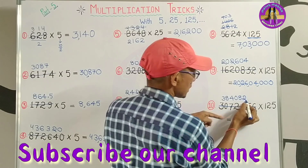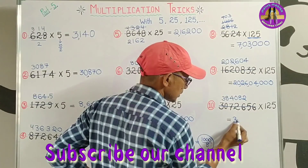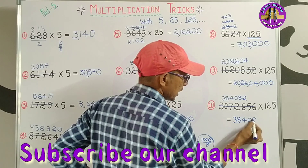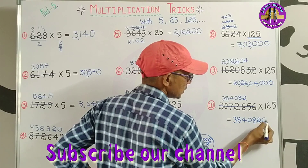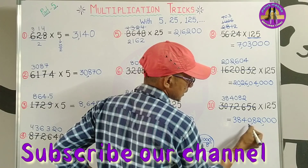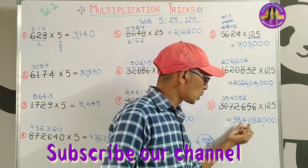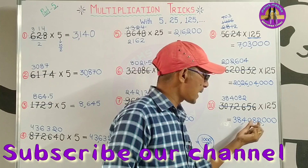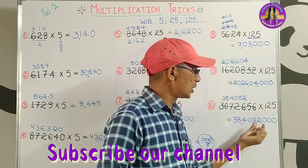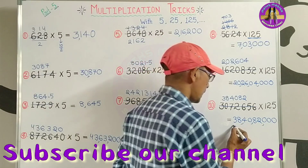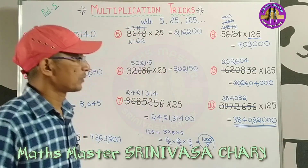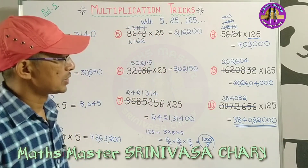So the answer becomes 38,40,823,000. So the final answer is 38,40,823,000. Now this is the answer. You will be able to do it.